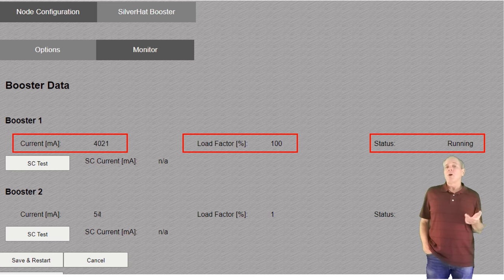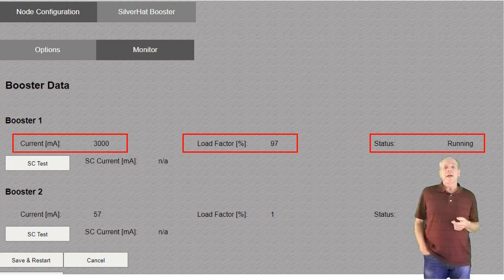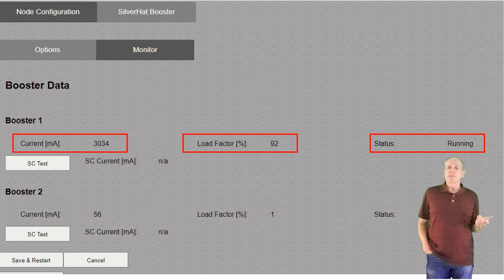If I now go back to say 3A load, the overload factor starts moving down and will settle at about 75% as the imaginary booster temperature decreases.